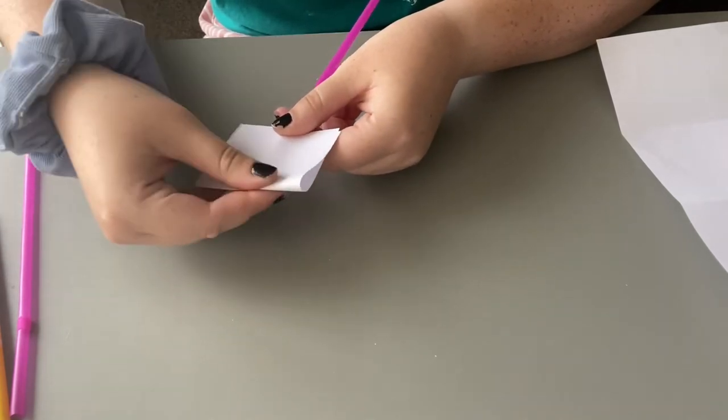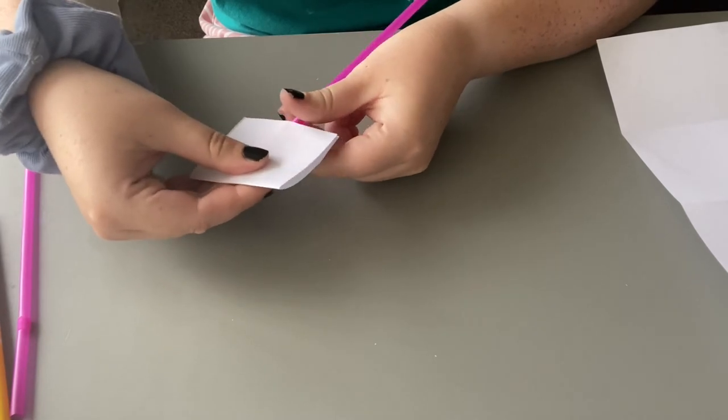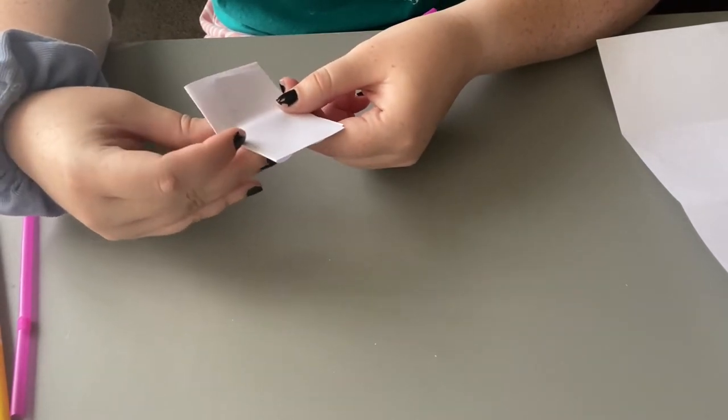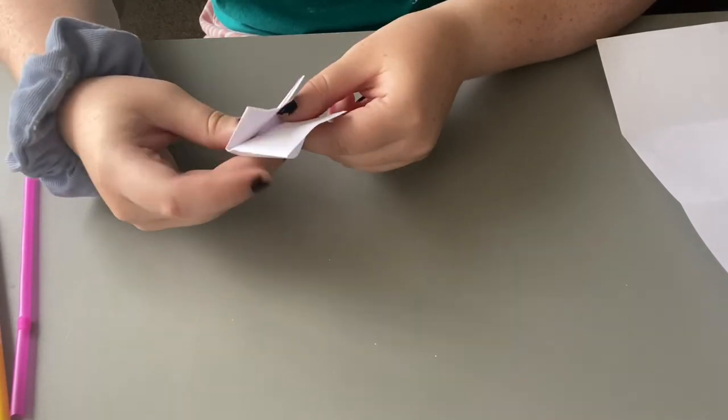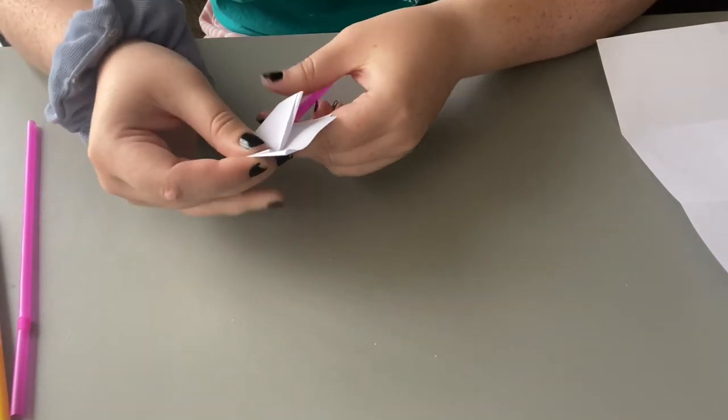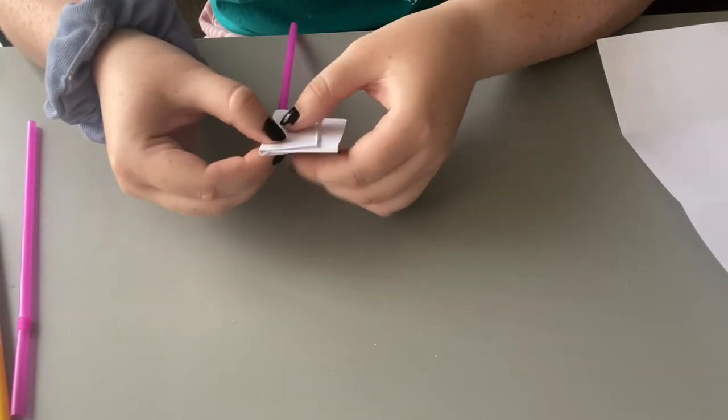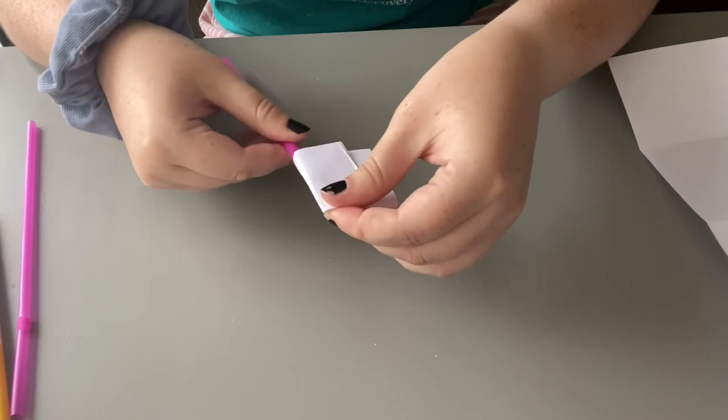Go ahead and just fold that. And then I'm going to take one side, and I'm going to fold it over to the other. But I want to leave a little bit of wriggle room for my rocket so that it's not too tight on the straw. Just making sure it's all folded good.